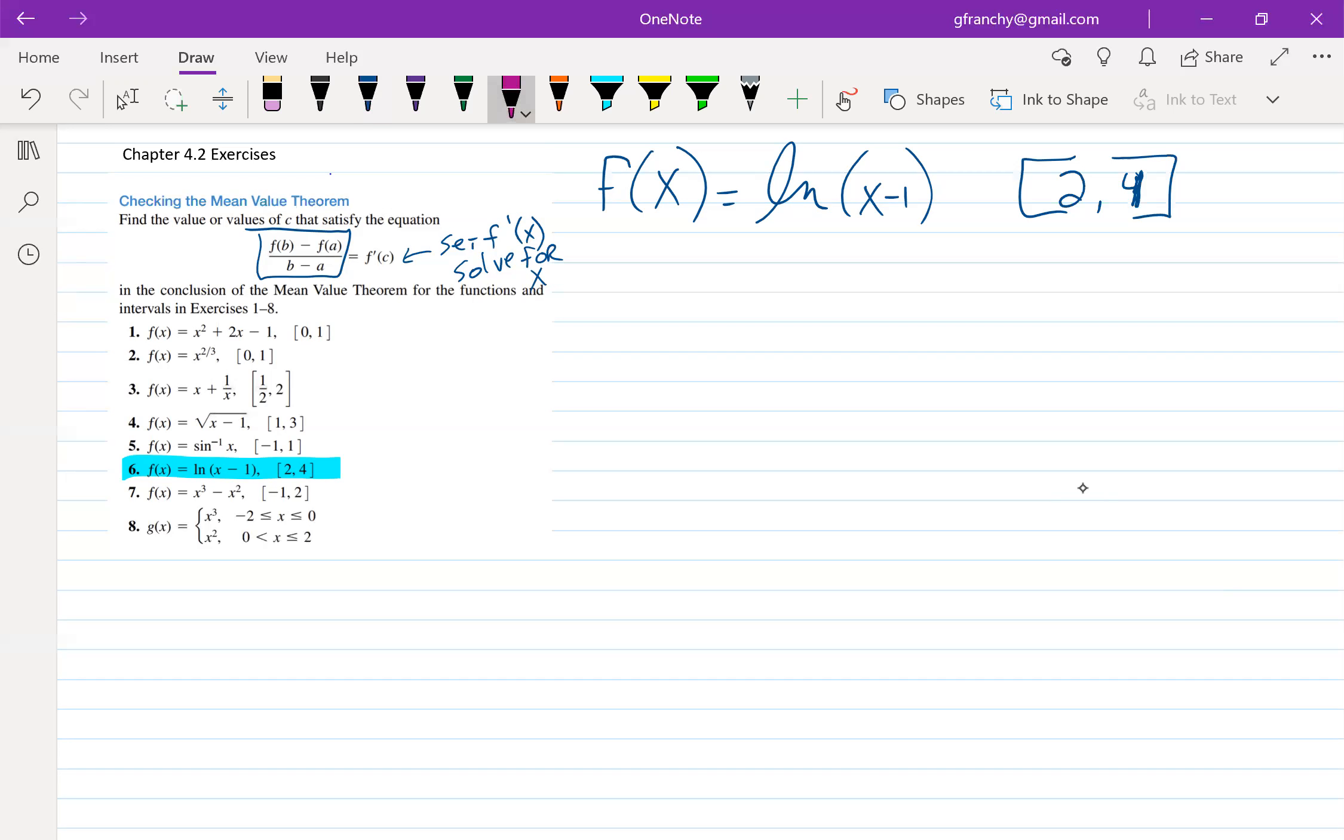So the first part of this that we'll do, we will do the average value. So we're going to take f of four minus f of two all over four minus two. And that gives us the natural log of four minus one, minus the natural log of two minus one, the natural log of two, minus the natural log of one, over two.